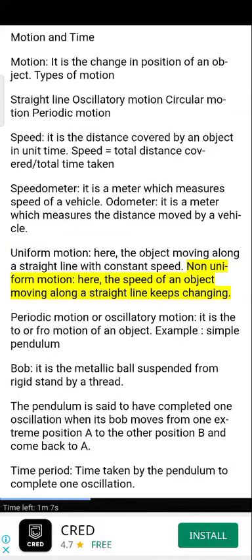Non-uniform motion: here, the speed of an object moving along a straight line keeps changing.